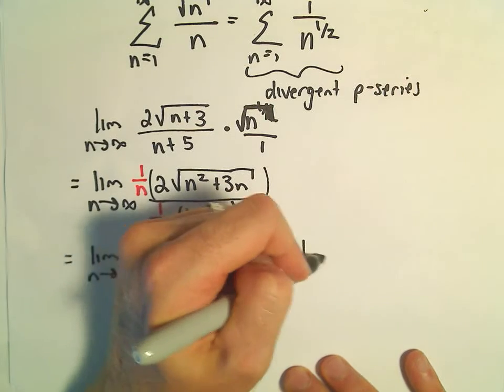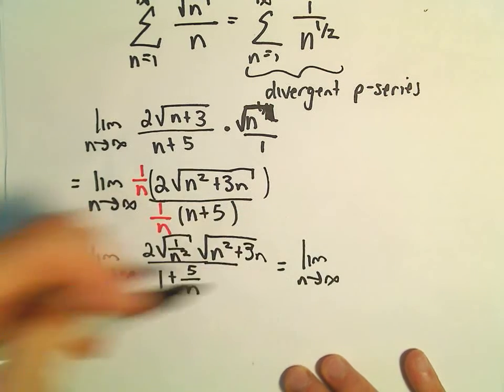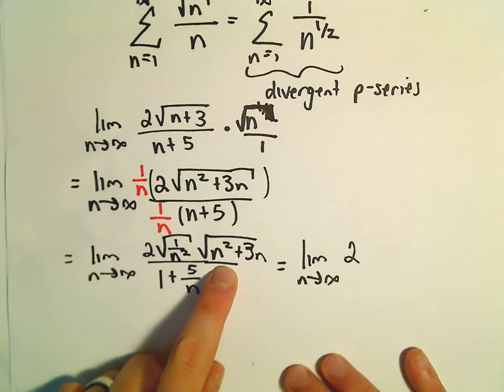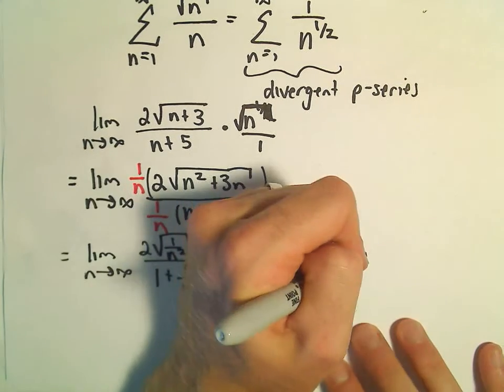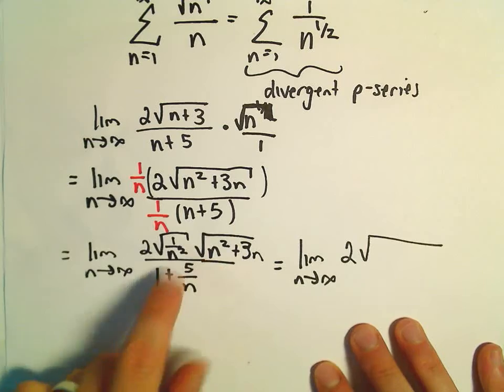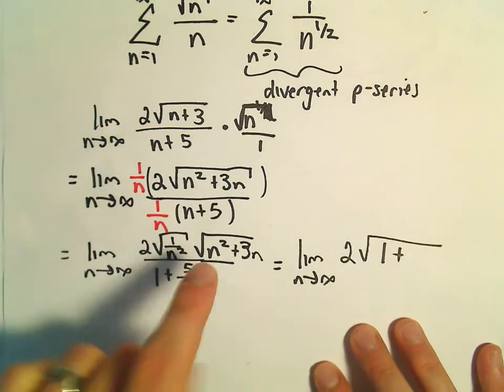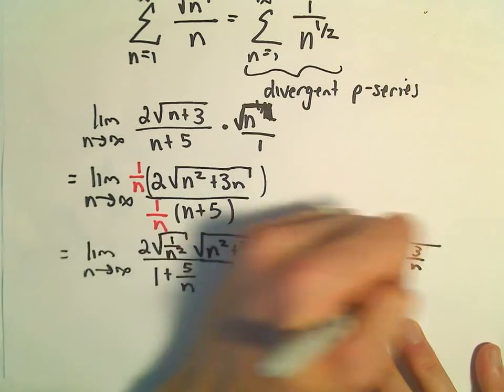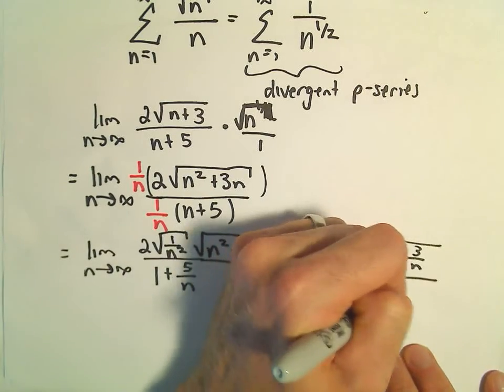Well, again, I'm just going to keep simplifying the numerator. We've got our 2. So we could distribute the 1 over n squared to the n squared plus 3n underneath the radical. And that would give us n squared over n squared, which is 1. And then we'd have 3n over n squared, or 3 over n. We've got 1 plus 5 over n.